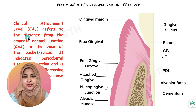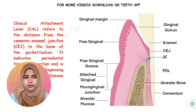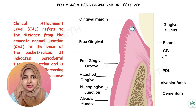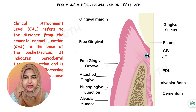Clinical attachment level refers to the distance from the cemento-enamel junction. Here we have the cemento-enamel junction — this is the cementum of the root, this is the enamel of the crown, and where they join we have the cemento-enamel junction. CAL is the distance from the cemento-enamel junction to the base of the pocket. So if this pocket was going and attaching till here, the distance between the CEJ and the base of the pocket is the clinical attachment level.